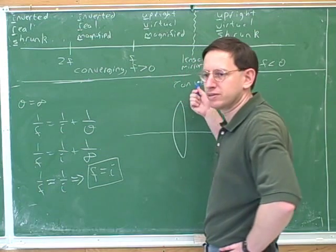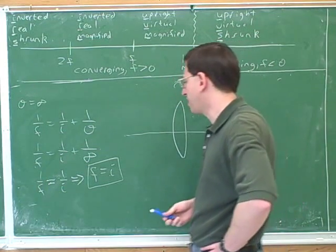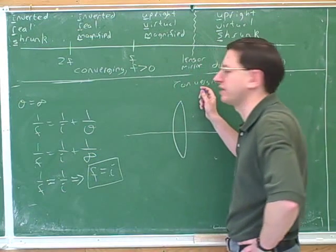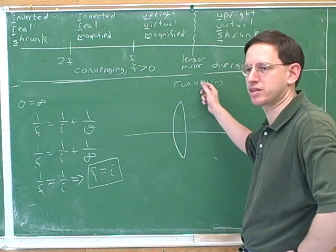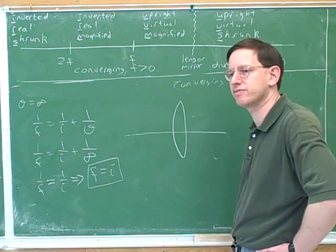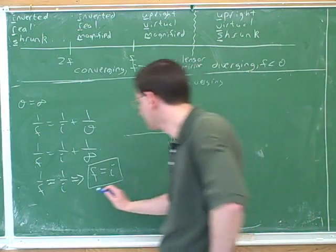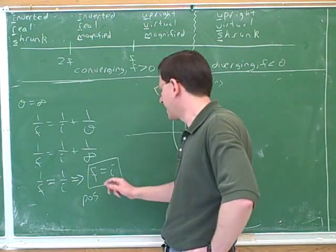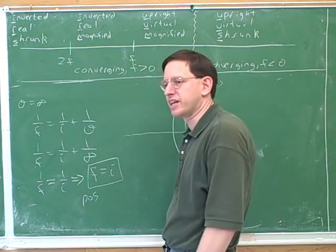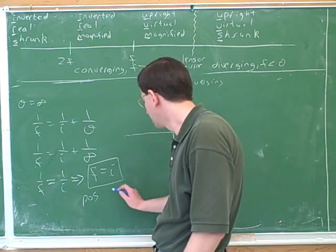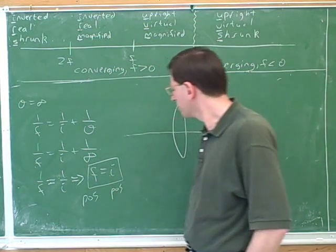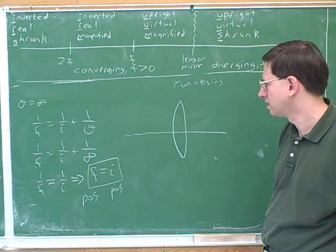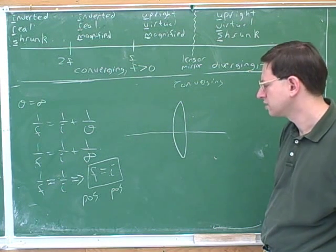This is a converging lens or mirror, so f is positive. Based on the equation f = i, i is also positive. A positive image distance means we have a real image.